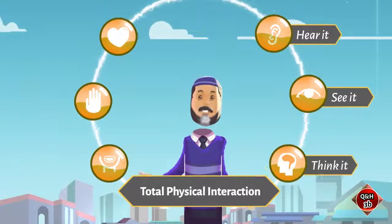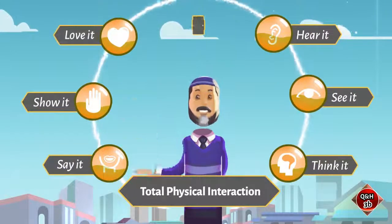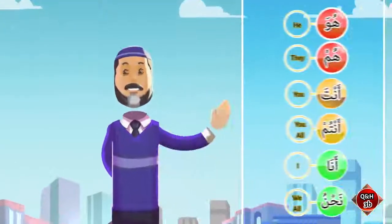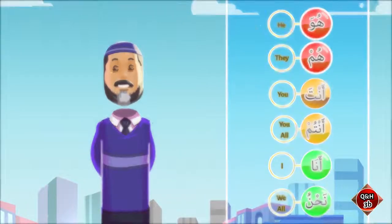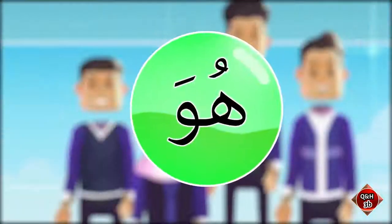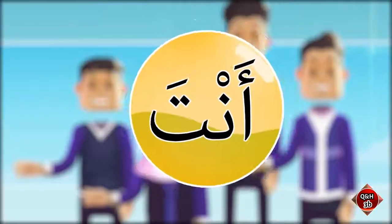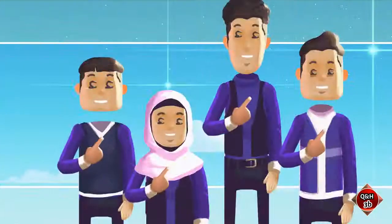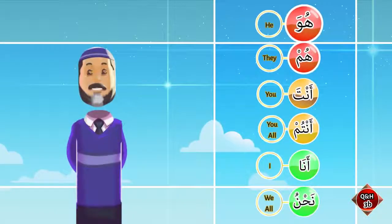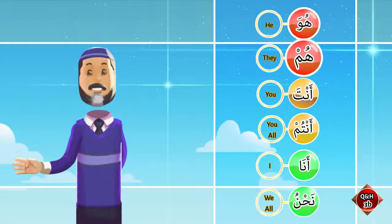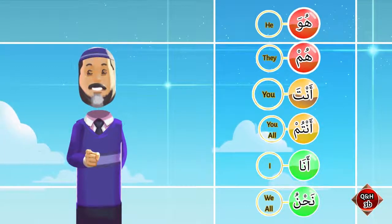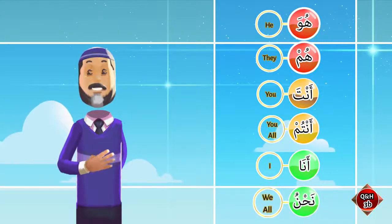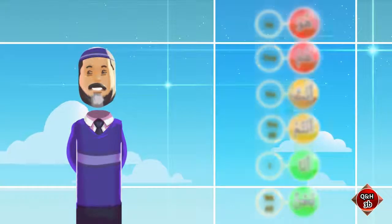Together we have already learned six words. Can you repeat after me? You know the meanings: huwa means 'he,' hum means 'they,' anta means 'you,' antum means 'you all,' ana means 'I,' nahnu means 'we.' Excellent!